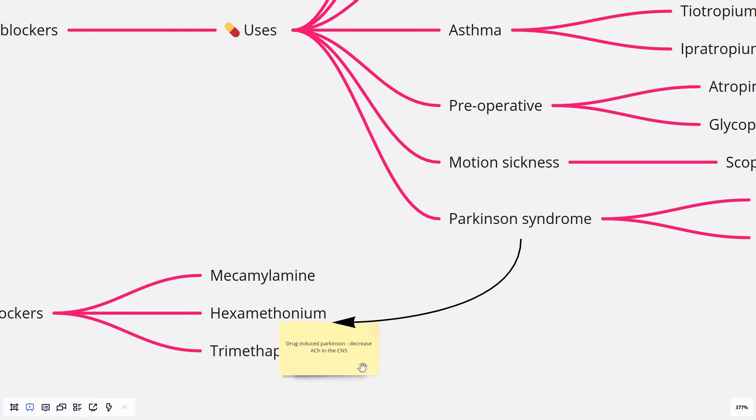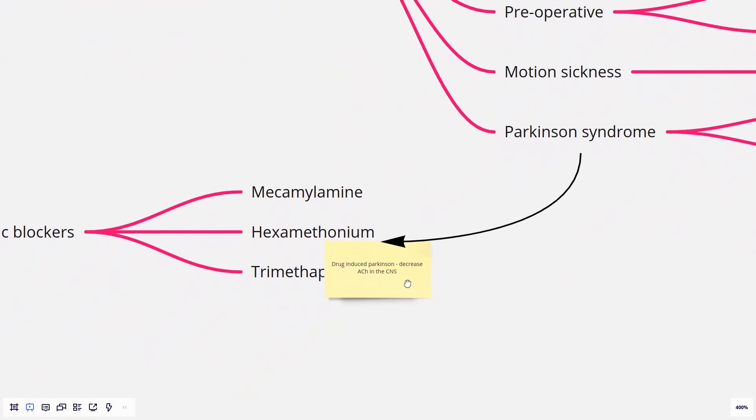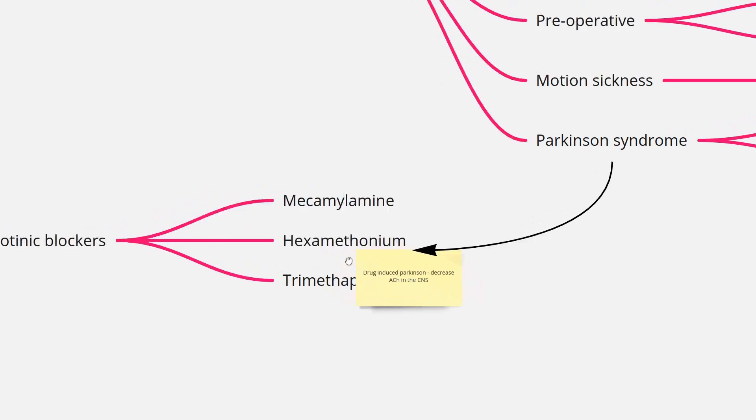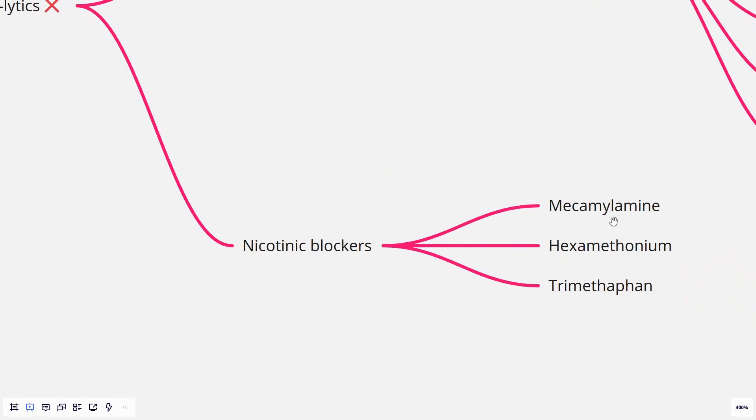For motion sickness, we use scopolamine. For Parkinson's syndrome, trihexyphenidyl and benztropine can be used. For Parkinson's syndrome, we use it specifically for patients who suffer from drug-induced Parkinson's disease, where we try to reduce the acetylcholine in the central nervous system, whereas in the early stages of Parkinson's disease, we try to increase dopamine levels. We have the nicotinic blockers: mecamylamine, hexamethonium, and trimethaphan. These are not commonly used; they are often used to block the reflex responses in the autonomic nervous system and can often appear in questions where specifically the reflex actions are tested.